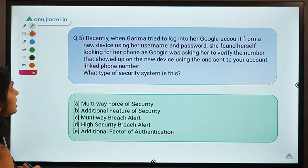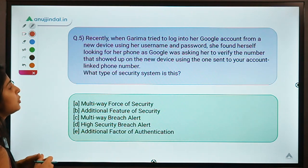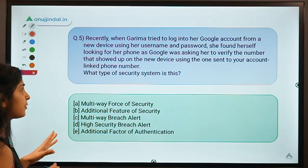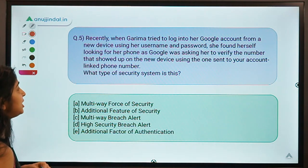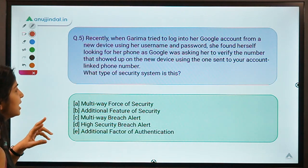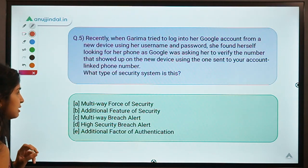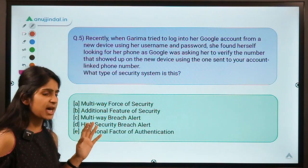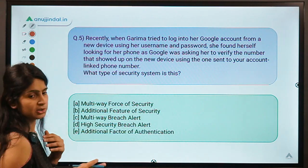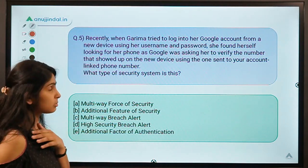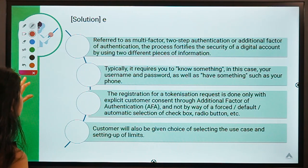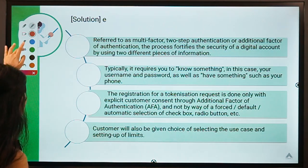Here is question five: Karima tried to log into her Google account from a new device using her username and password. Google asked her to verify the number shown on the new device against one sent to her account-linked phone number. What type of security system is this? The correct option is E — AFA, that is Additional Factor of Authentication.